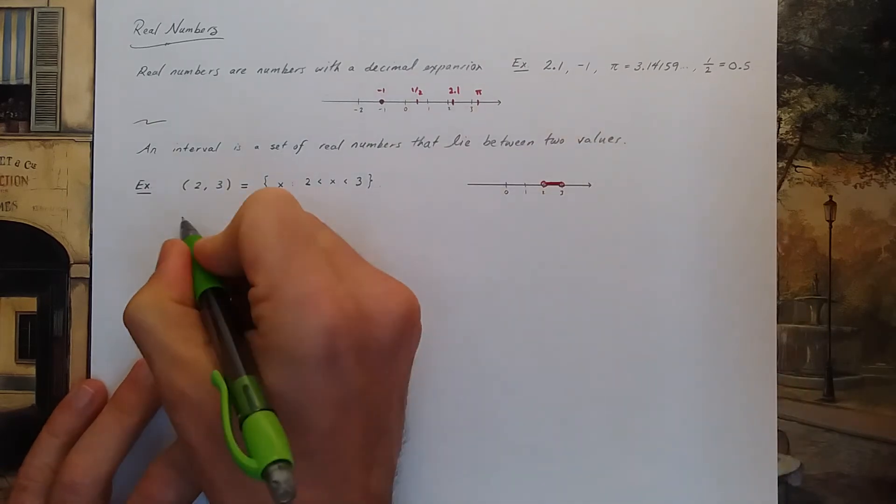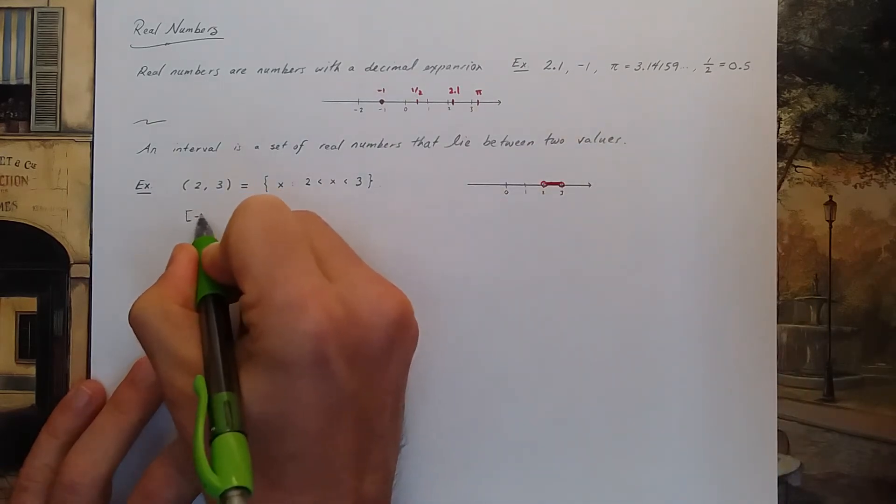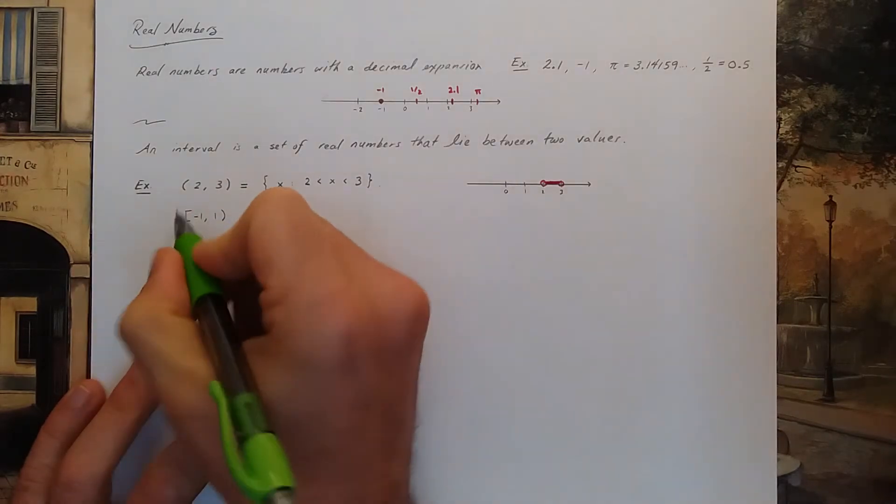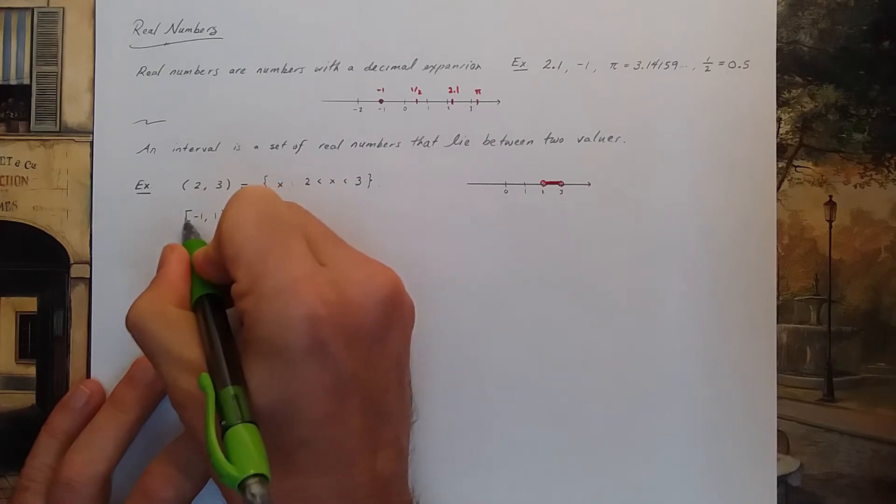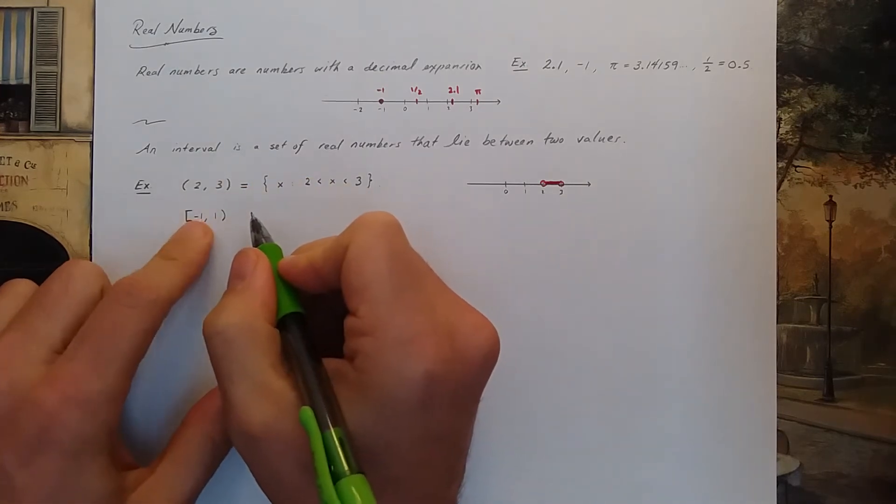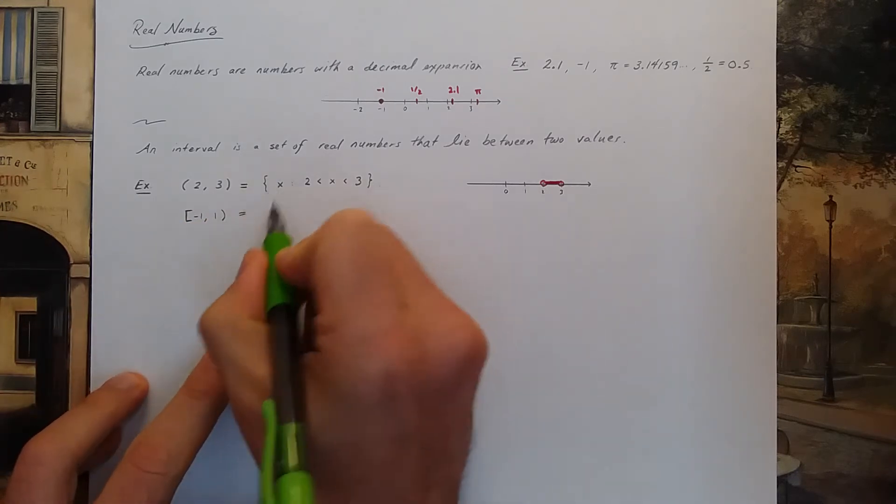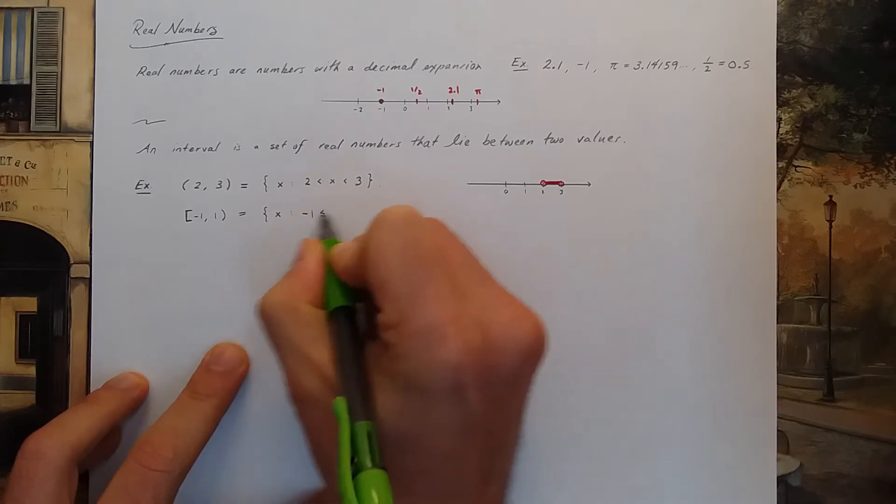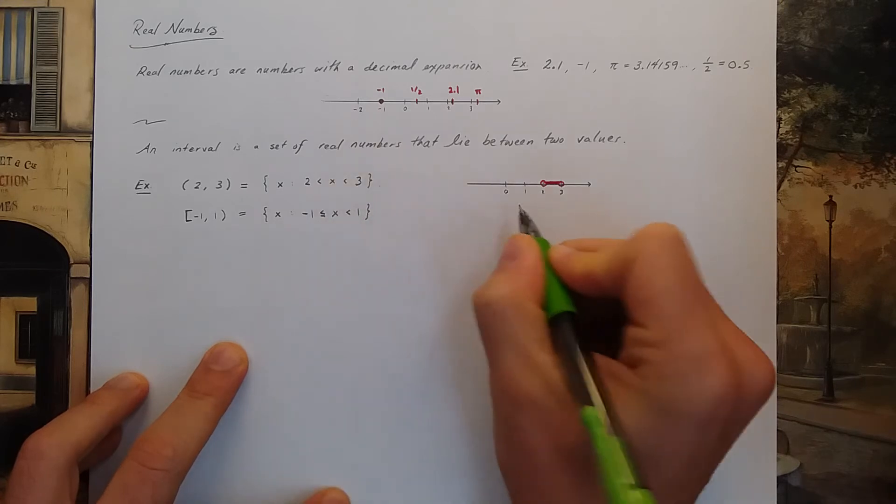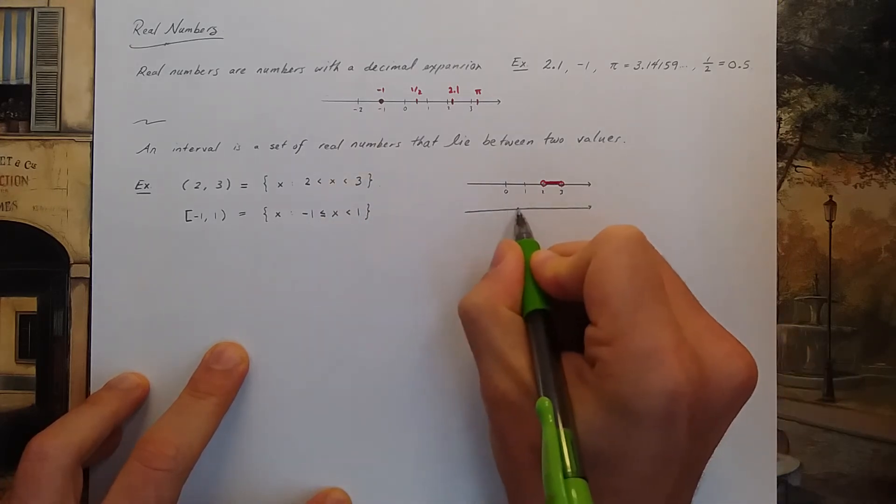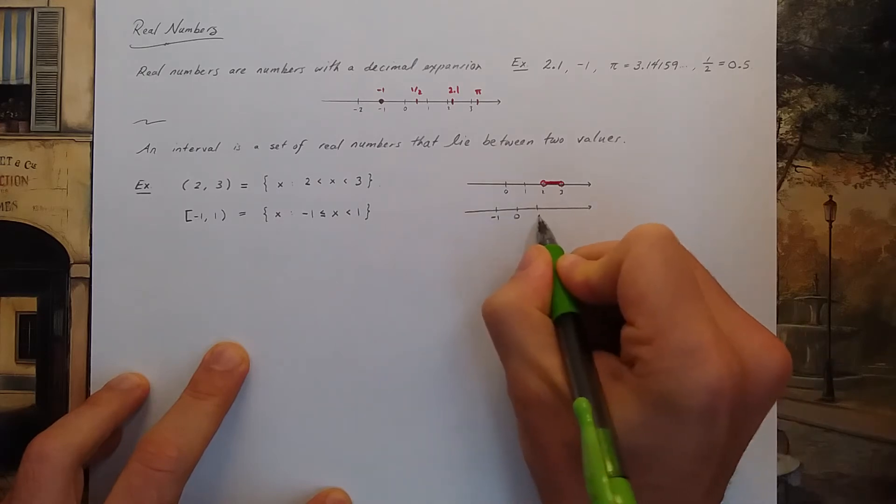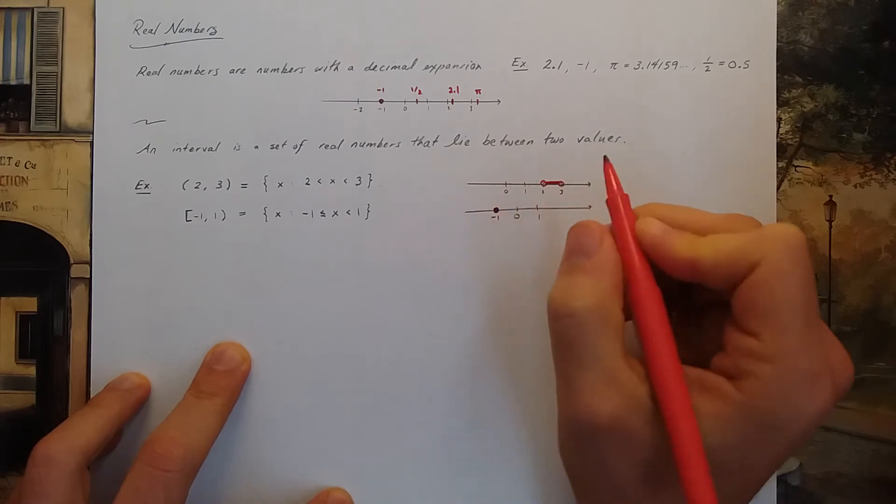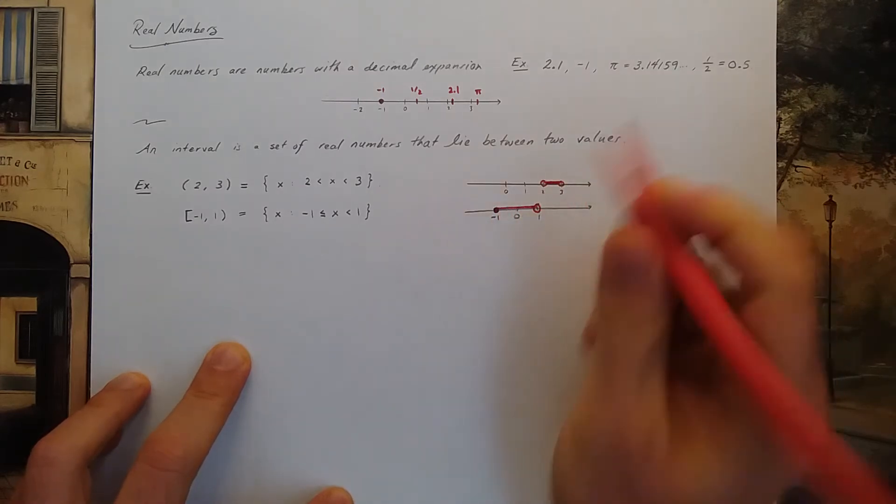Another interval could be the interval from negative 1 to 1. Now, this time I put a different style of parentheses. If I have this hard closed parentheses, that means that negative 1 is included in the interval. Writing it down this way, this is x such that x is bigger than or equal to negative 1, but less than 1. If I had my number line, there's 0, negative 1, 1. I would start at negative 1 with a filled in circle and my interval goes to positive 1.